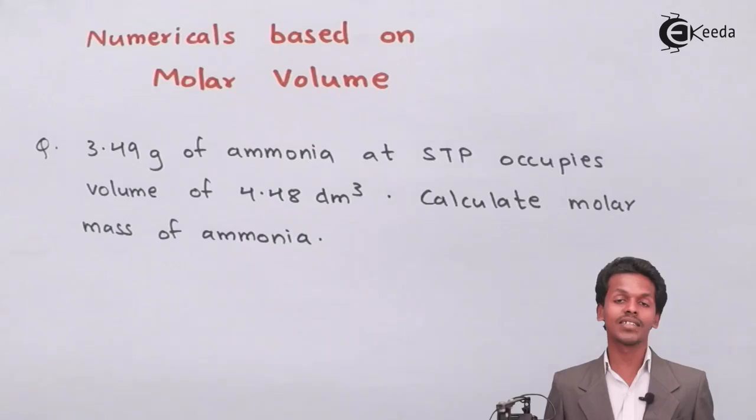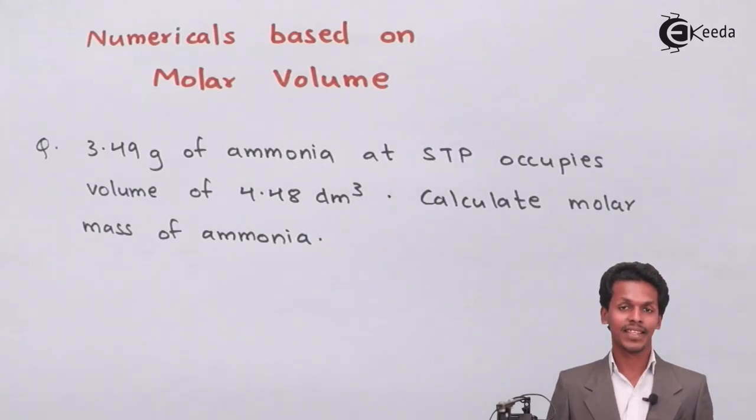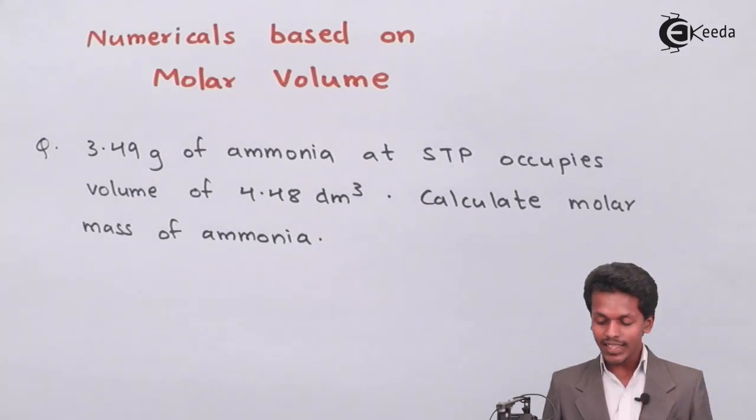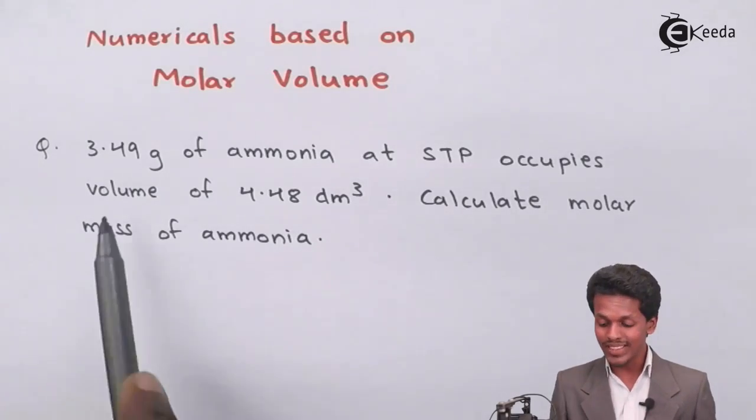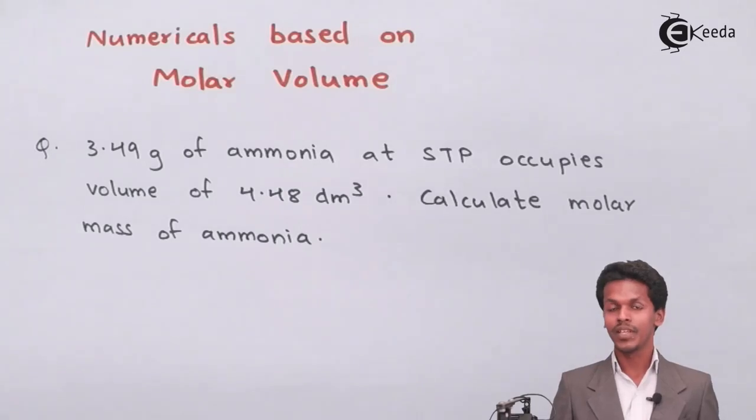In this case, we have to calculate the molar mass of ammonia based on these two data that we have.